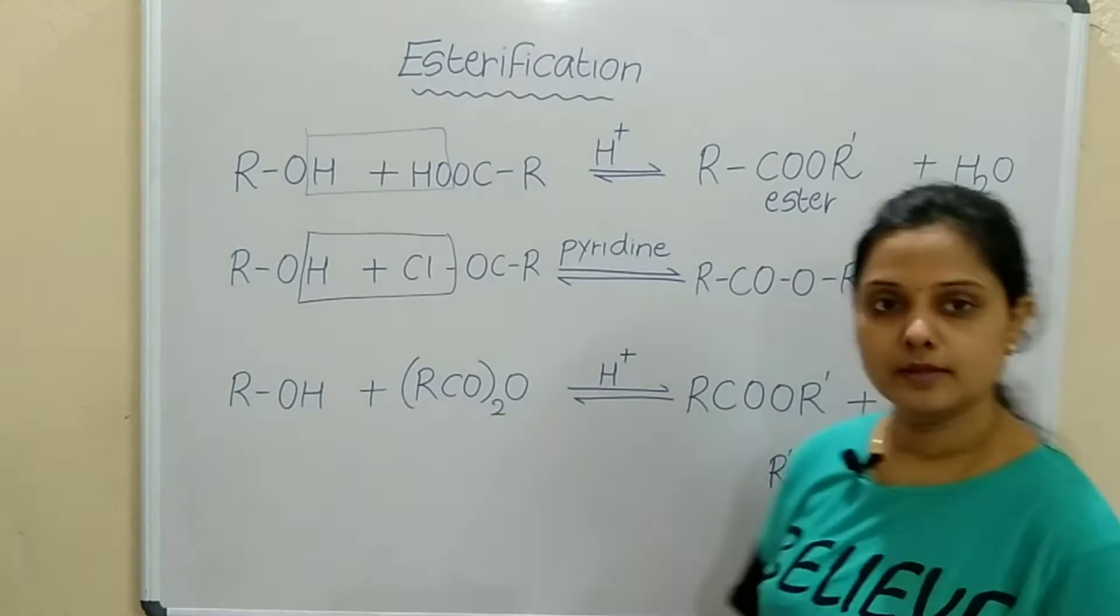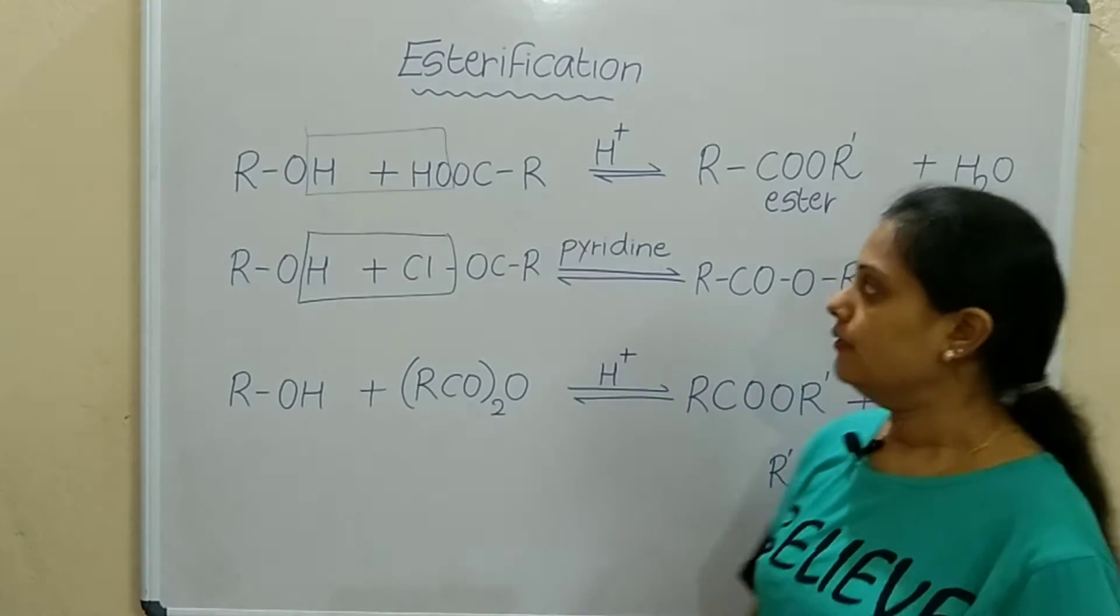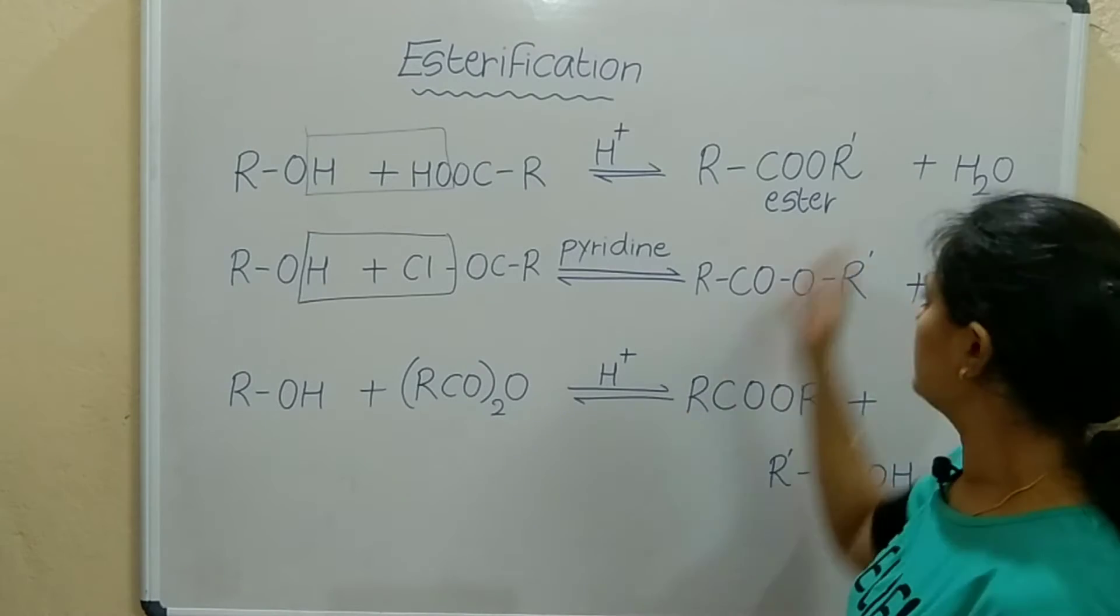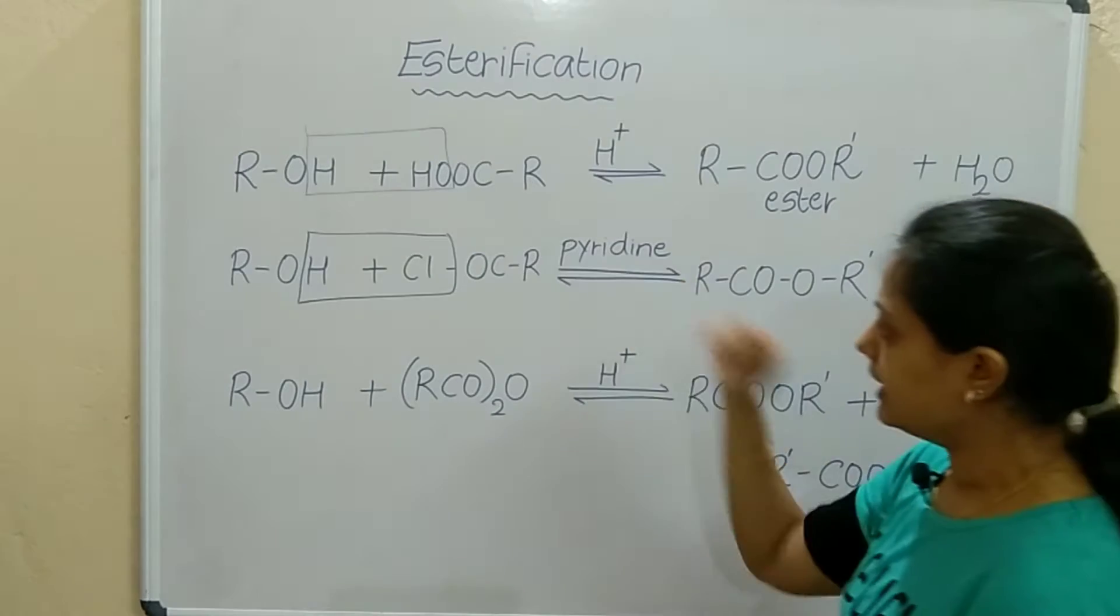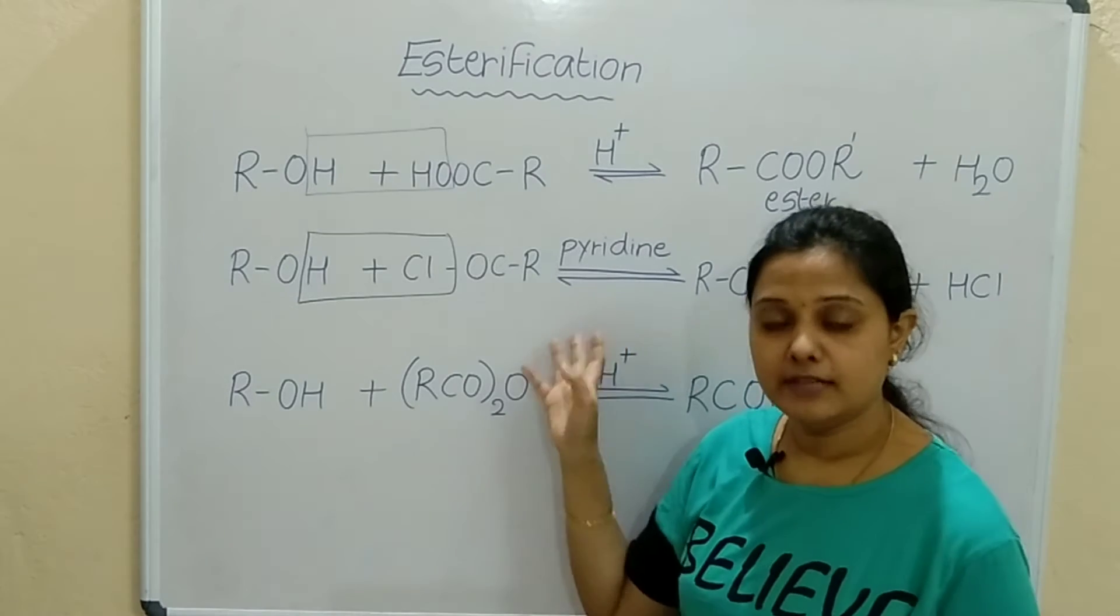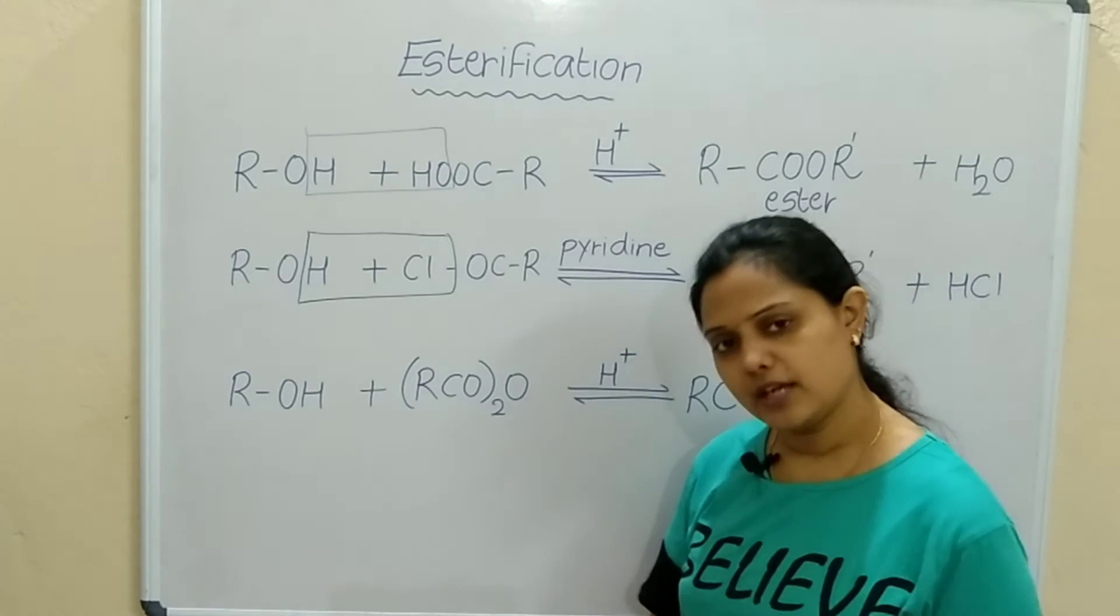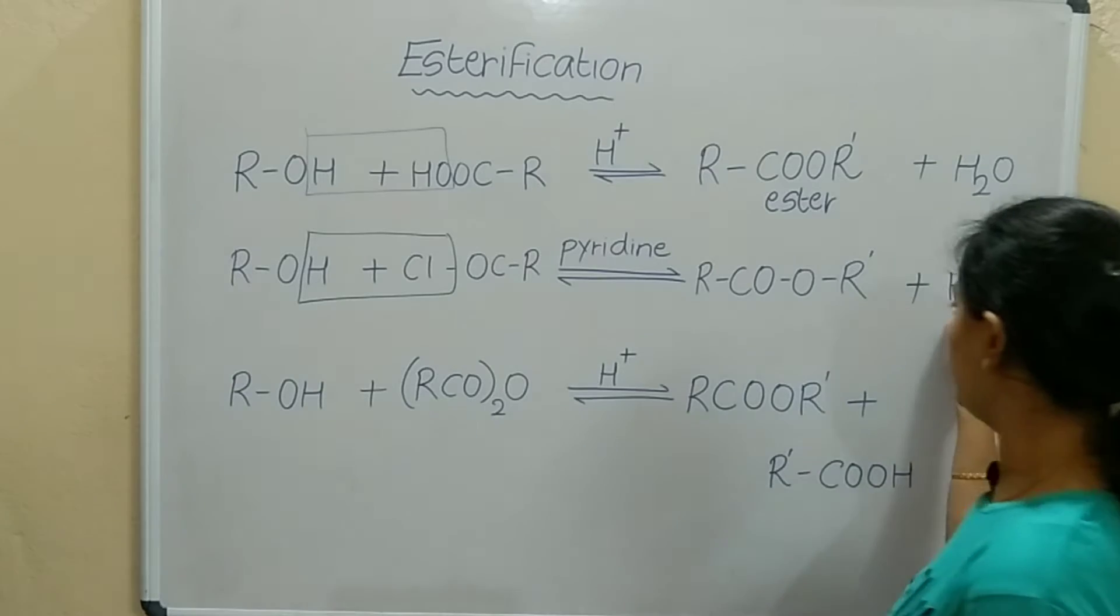Remember the byproducts as well, because byproducts are different in each equation. In the second equation we are using pyridine, which is a basic compound. Why are we using pyridine? Because hydrochloric acid is formed in the second equation.